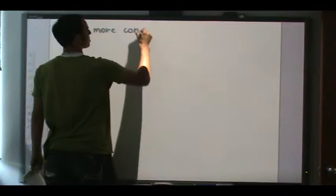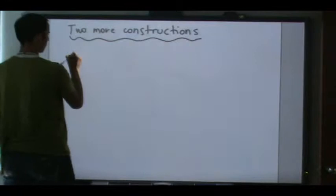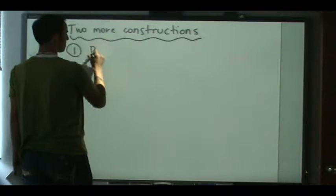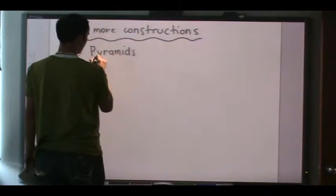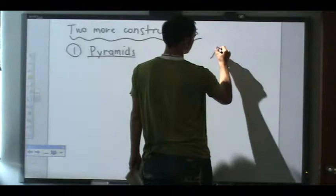I want to start the class today by telling you about two other constructions of how to make new polytopes from old polytopes. The first one is the construction of pyramids, which you already know — we're going from two to three dimensions.